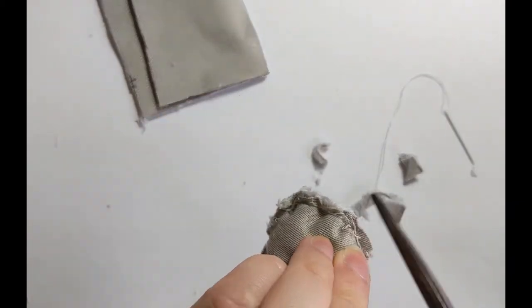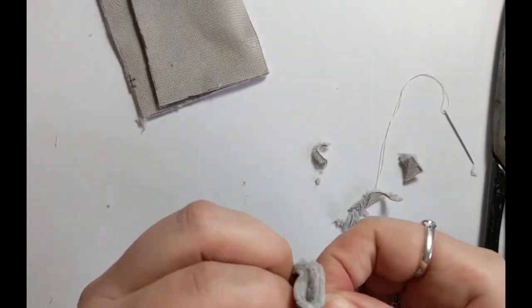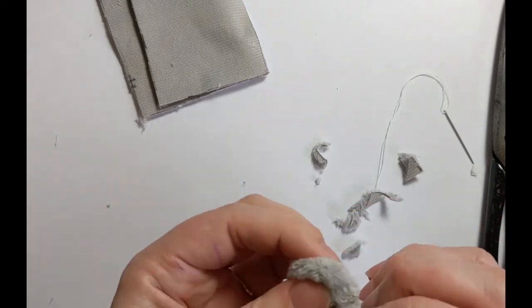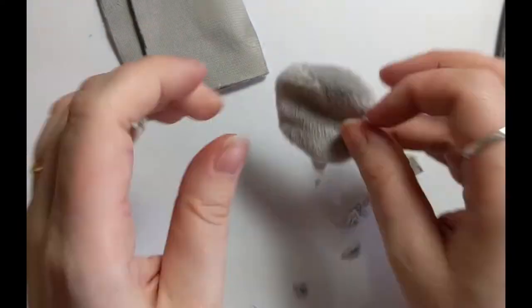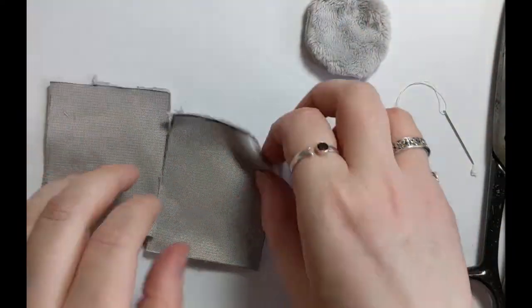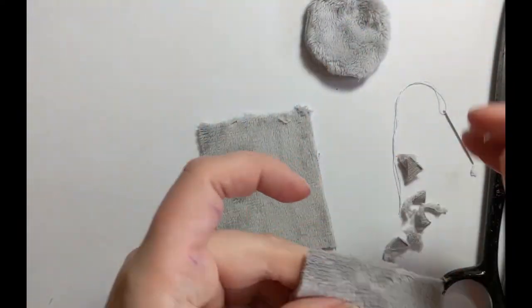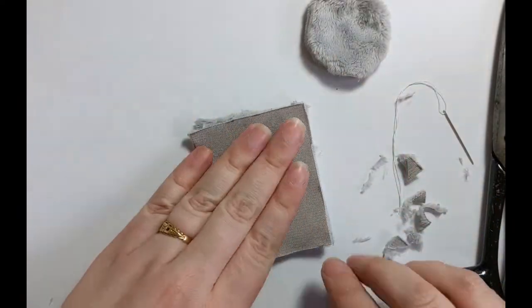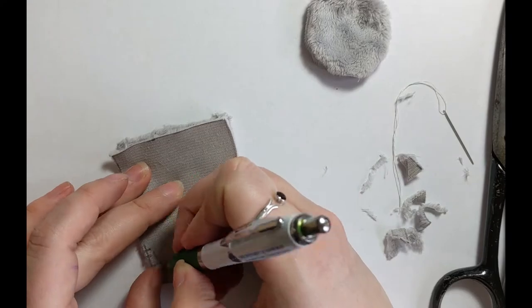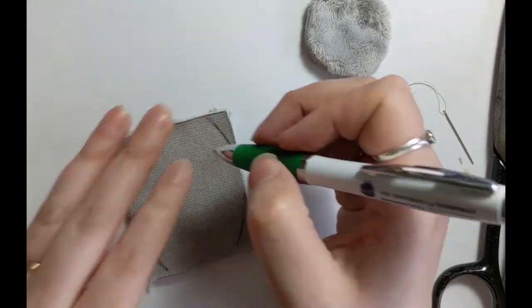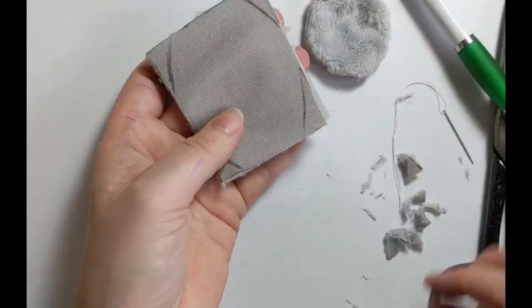And then flip it inside out. There we go. So it works exactly the same for the body. I'm just going to round off those corners there, just a little guide to show, and then stitch it exactly the same.